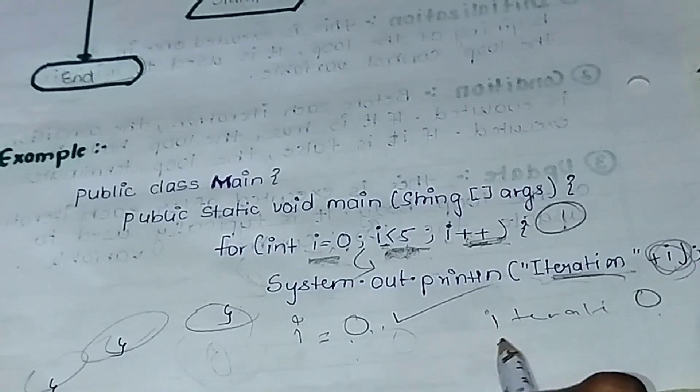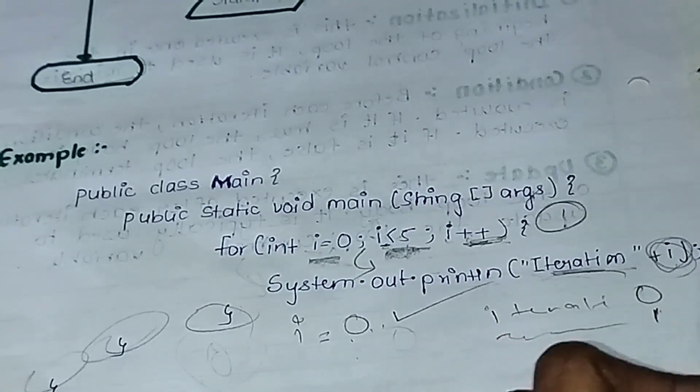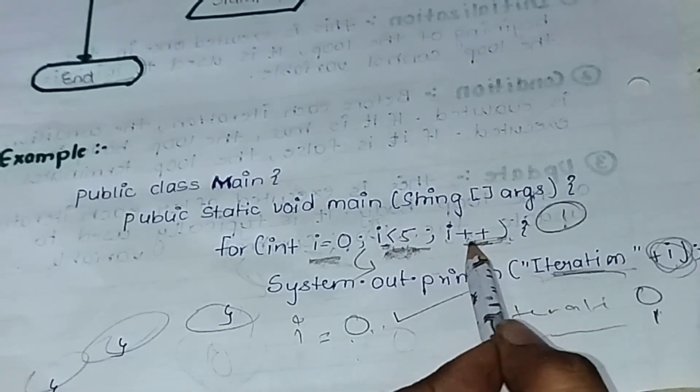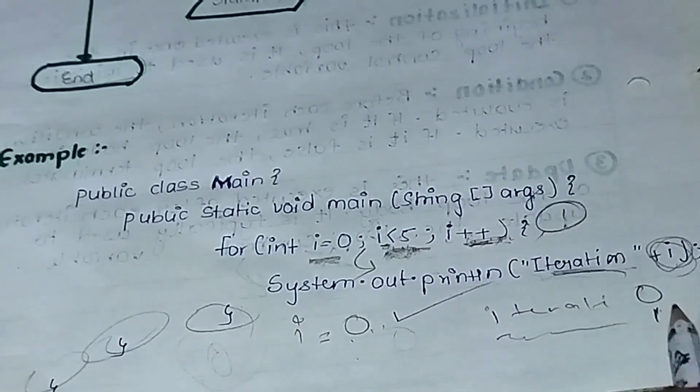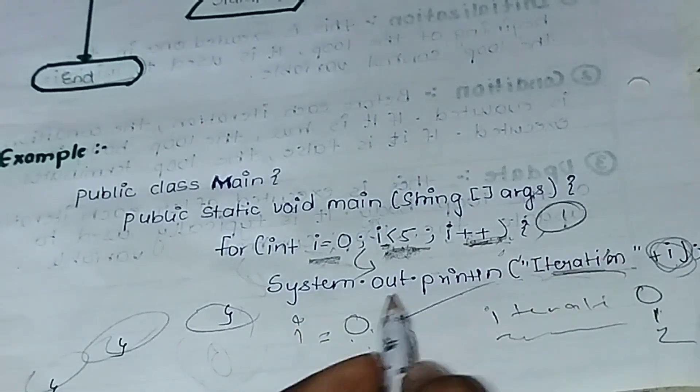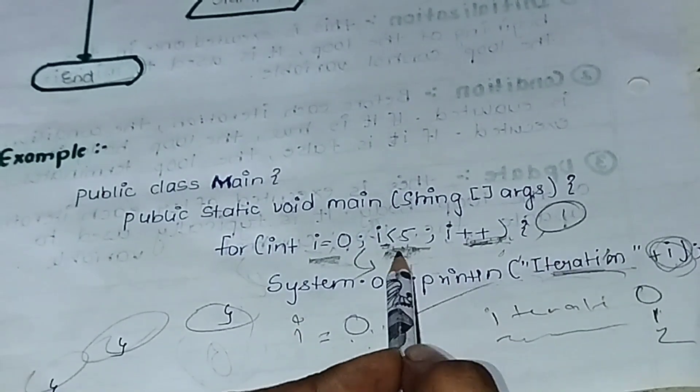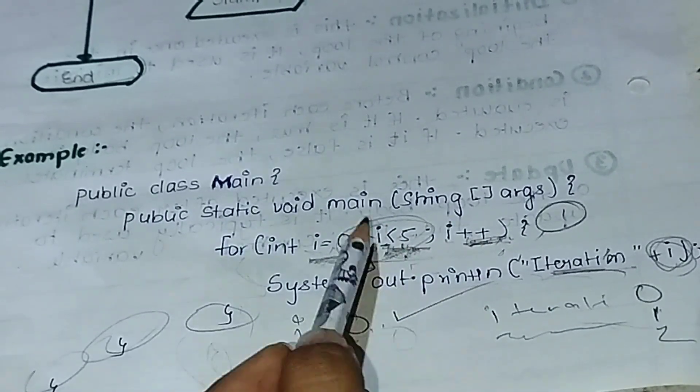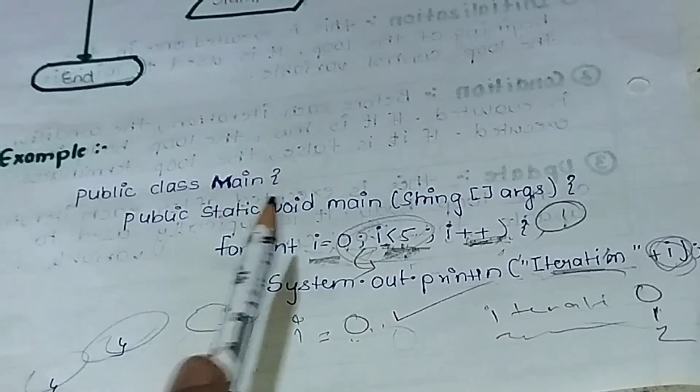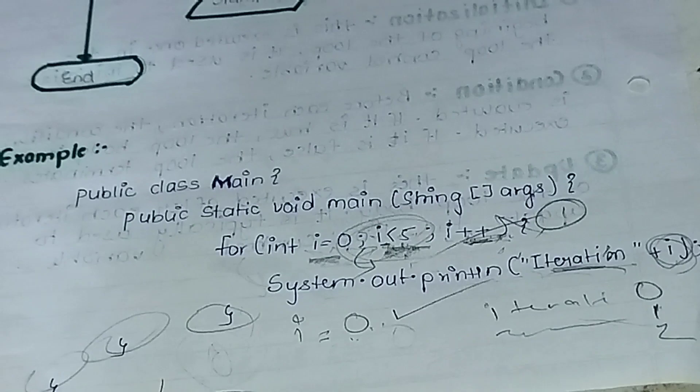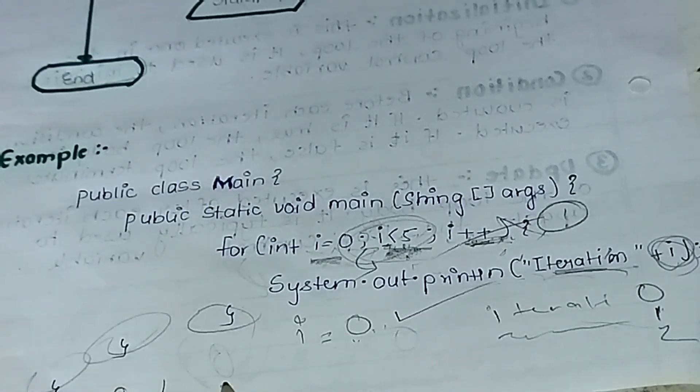Again it will go and check: 1 is less than 5, that is true. Again it goes to i plus 1, which is 1 plus 1 equals 2. Then it will print 2, then 3, 4... it will go up to 4. And then it will check: 5 is greater than 5? No, the condition is 5 is equal to 5, so the condition becomes false and it will exit the loop. So in our system it will print 0, 1, 2, 3, and 4.